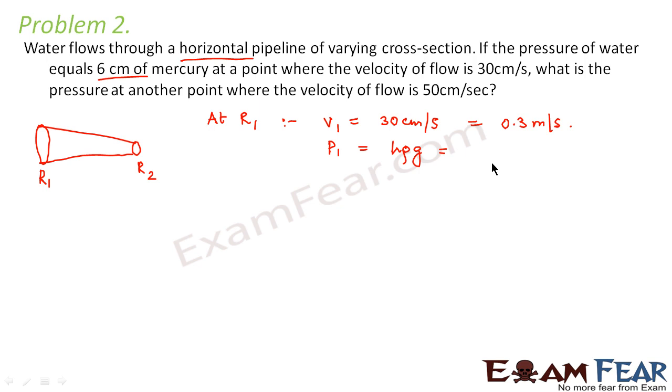The pressure at this point P1 is equal to H rho G because it is given as 6 cm of mercury. So it is H rho G. So H is 6 into 10 to the power minus 2 meters, rho is density of mercury.